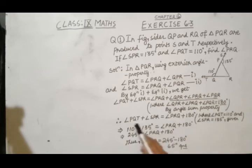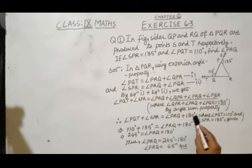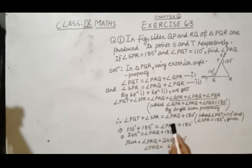Where angle PQT, we are given 110 and angle SPR equals 135. Therefore, this relation becomes 110 degrees plus 135 degrees equals angle PRQ plus 180 degrees. The sum we have 245 equals angle PRQ plus 180 degrees, that's why angle PRQ equals 245 minus 180 degrees and this results to 65 degrees, that's the required value of angle PRQ, that's it.